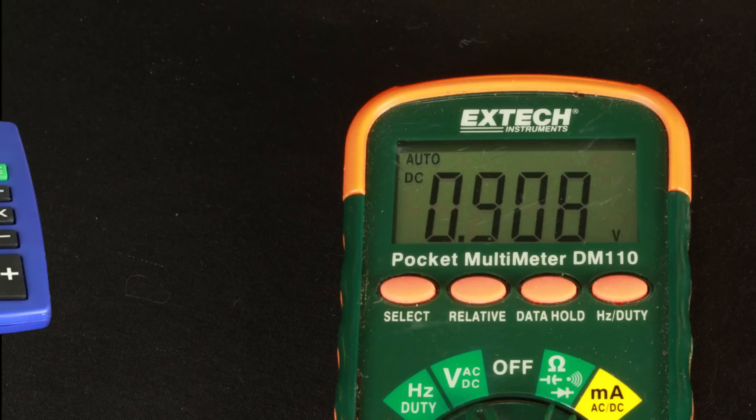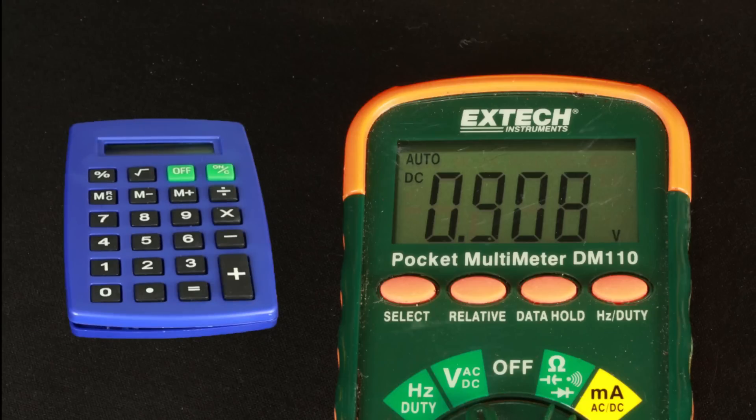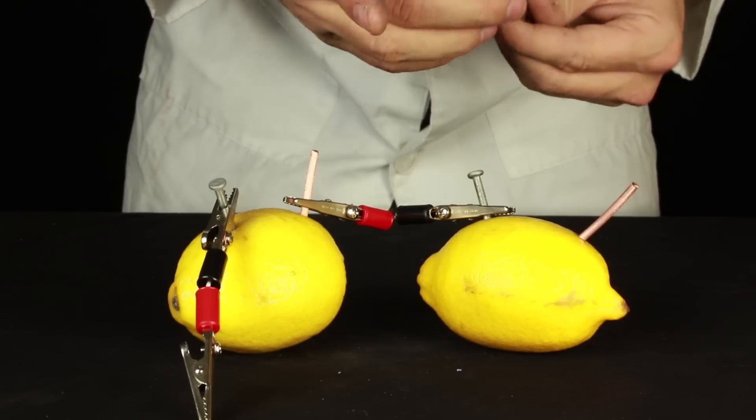However, since the calculator we're trying to power requires 1.5 volts, we'll need to connect two lemon batteries in series.